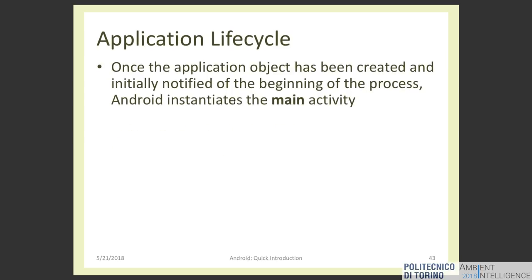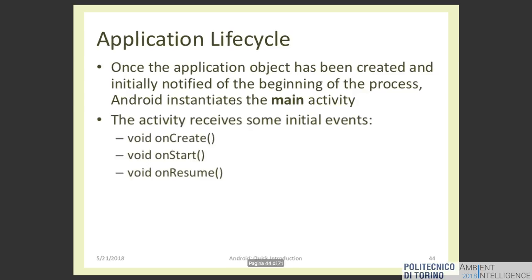Typically we don't have to modify this Application object. When the Application object has been created, Android instantiates the main activity. This is not the entry point — it's simply the first activity you want to open when you tap the application icon. The activity is a Java class and can react to events such as onCreate, onStart, and onResume. These three methods are called at the beginning and they mean that the application is now ready for interaction with the user.